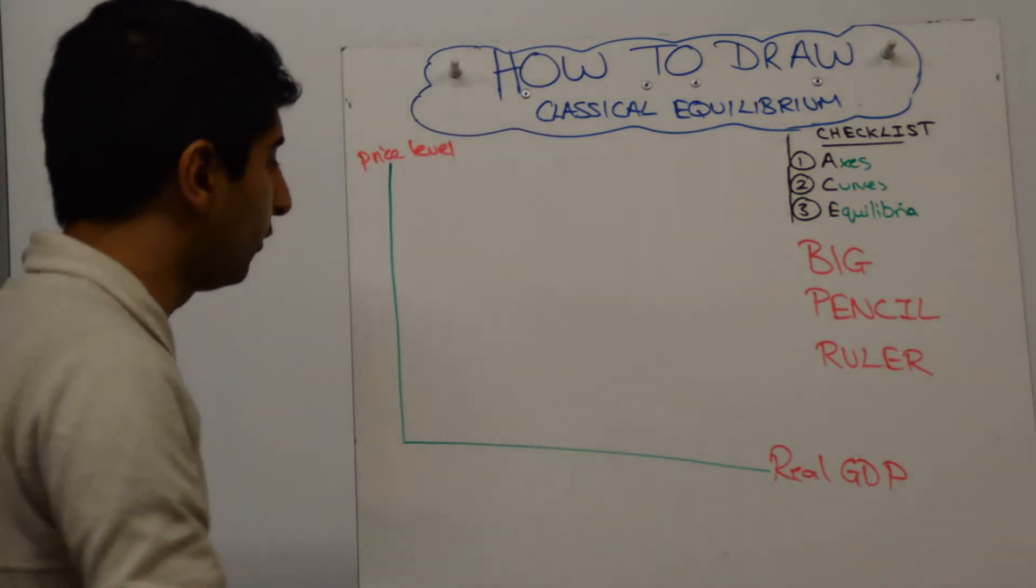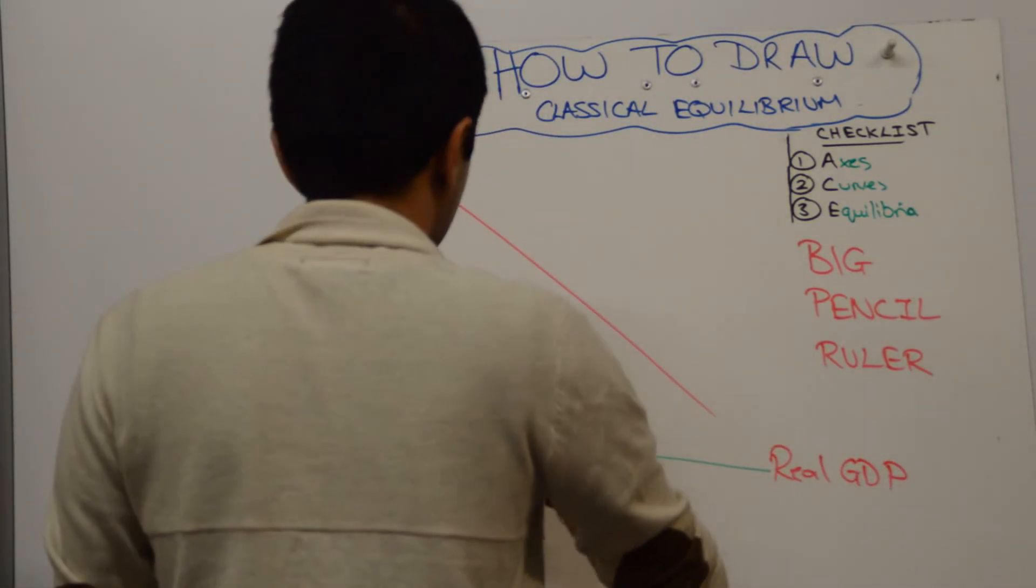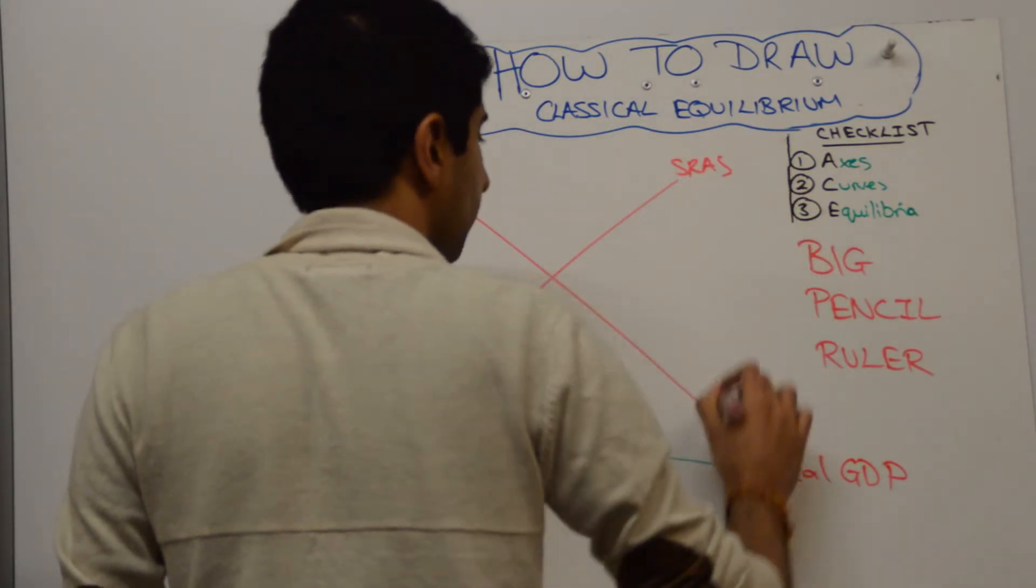Then, you need to draw aggregate demand and short-run aggregate supply. Label them both.